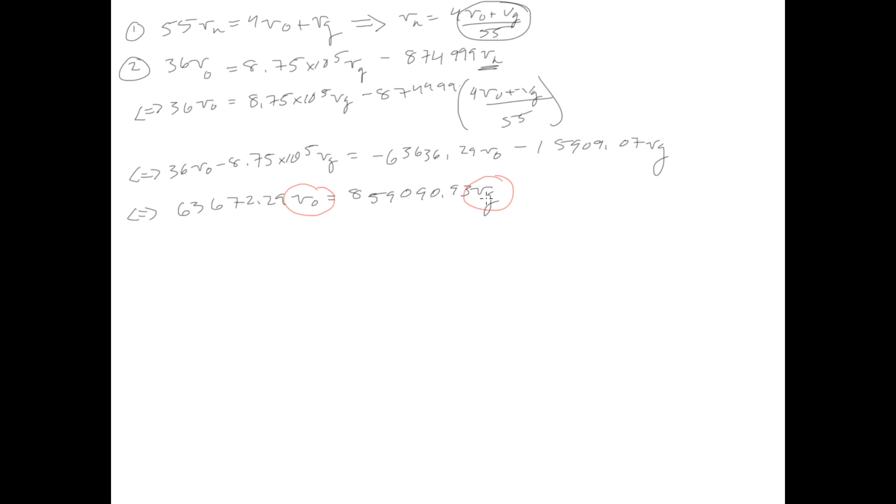From these two equations, we've now isolated it so that we have this one equation just in terms of V0 and Vg. And in the beginning, the actual problem that we're trying to solve is to find the gain, which is just labeled as V0 over Vg. So the gain would just be V0 over Vg, which is just equal to this whole number divided by this whole number. So 859090.93 over 63672.29, which if you were to divide it, would just be equal to 13.49, and that is your gain.